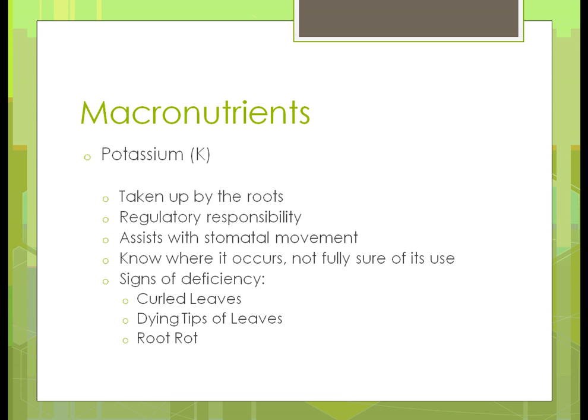Potassium is taken up by the roots and is naturally present in the soil. It helps with osmotic movement through the cells of the plant and does regulatory work, helping things move around to where they're needed. If you don't have enough potassium, signs include curled leaves, drying tips on leaves, or root rot when you pull the plant out — indicating a potassium deficiency.